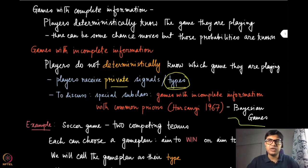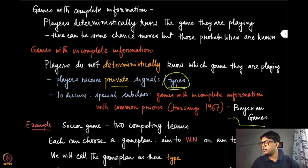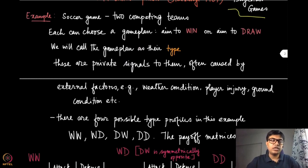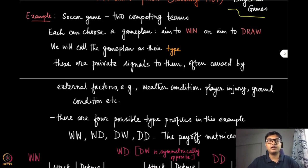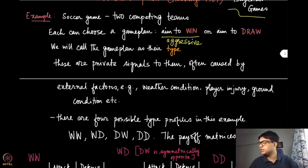As the term Bayesian suggests, you have some sort of a prior distribution and, based on that and your own information about your own type, you have a Bayesian belief about the other players' types. Let's look at an example: a soccer game between two competing teams. Each team can choose a game plan — they can play aggressively, meaning they are aiming to win, or they can play passively, meaning they are aiming to draw.